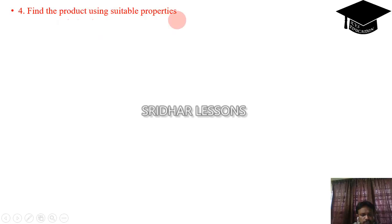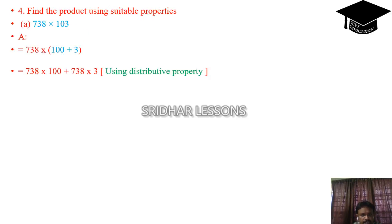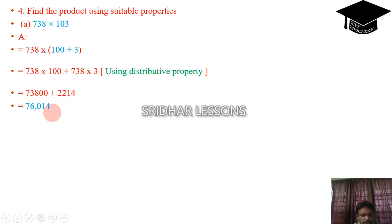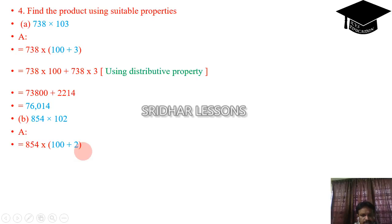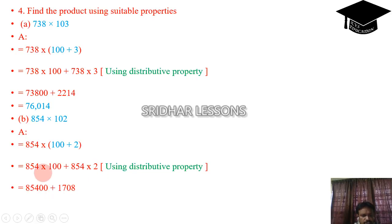Find the product using suitable properties. 738 into 103: write 103 as 100 plus 3. By distributive property: 738 into 100 plus 738 into 3 equals 73800 plus 2214, giving 76014. Next: 854 into 102. Write 102 as 100 plus 2. By distributive property: 854 into 100 plus 854 into 2 equals 85400 plus 1708, giving 87108.